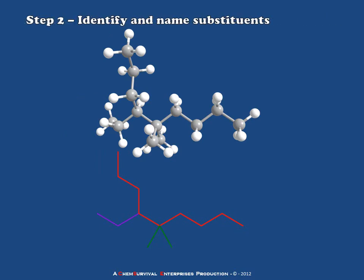In our next step, we have to identify and name the substituents. In this case, there are two different kinds of substituents within the molecule. Methyl is indicated in green, and an ethyl indicated in purple. So this is going to be some sort of ethyl dimethyl hydrocarbon.